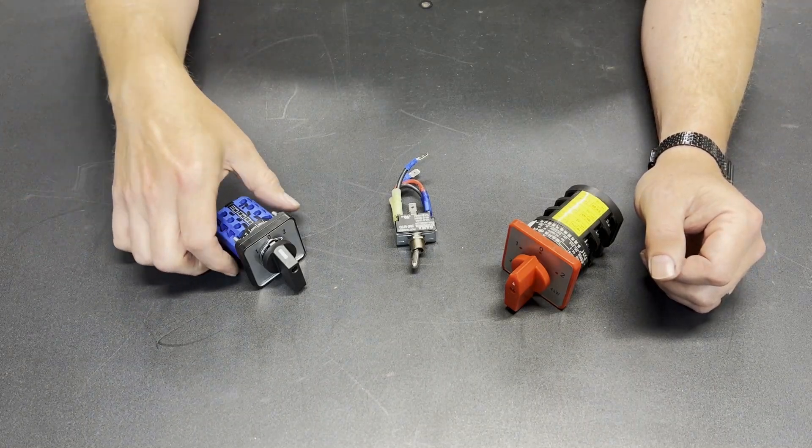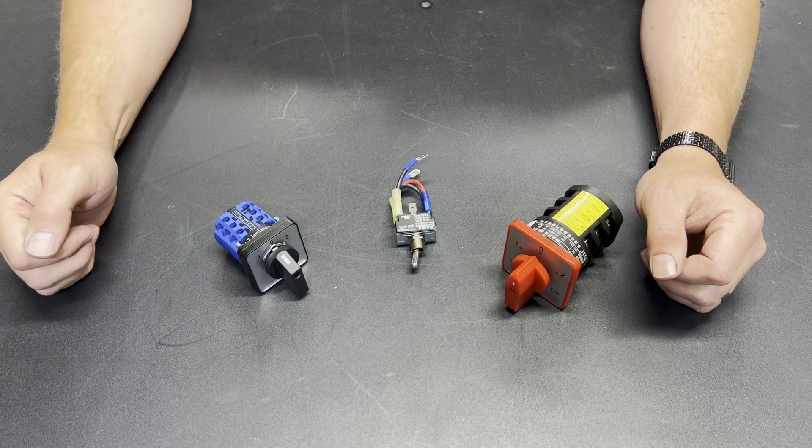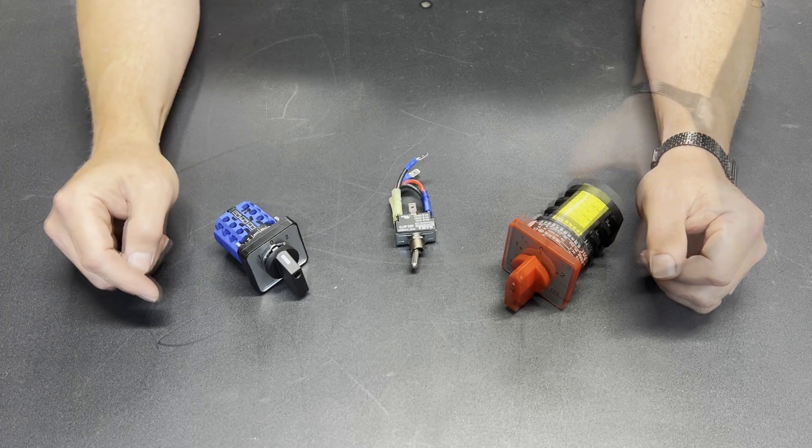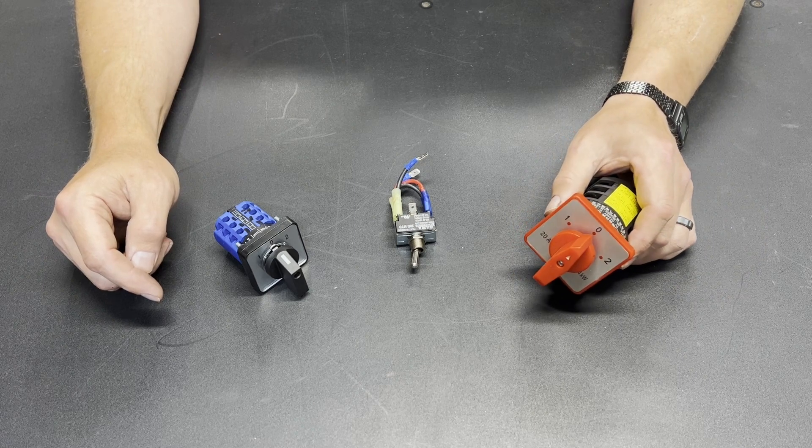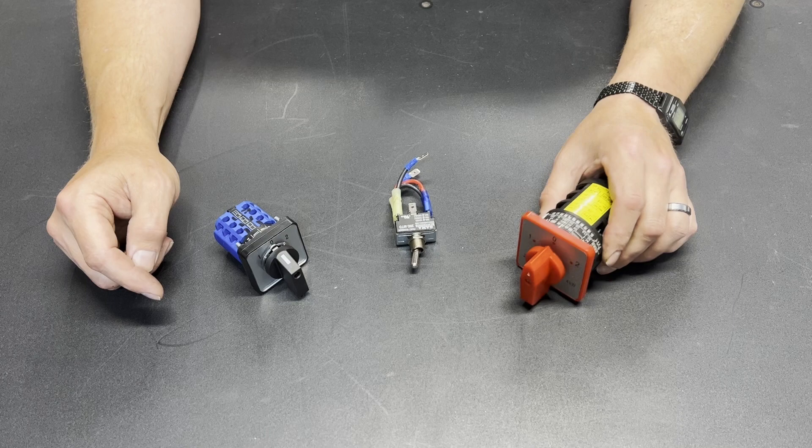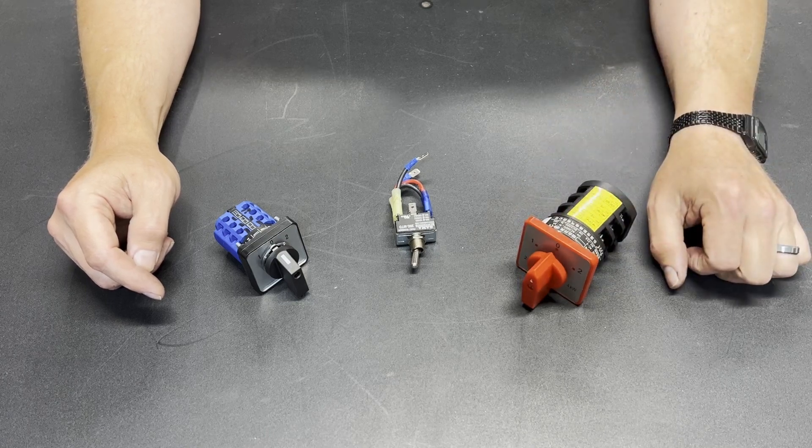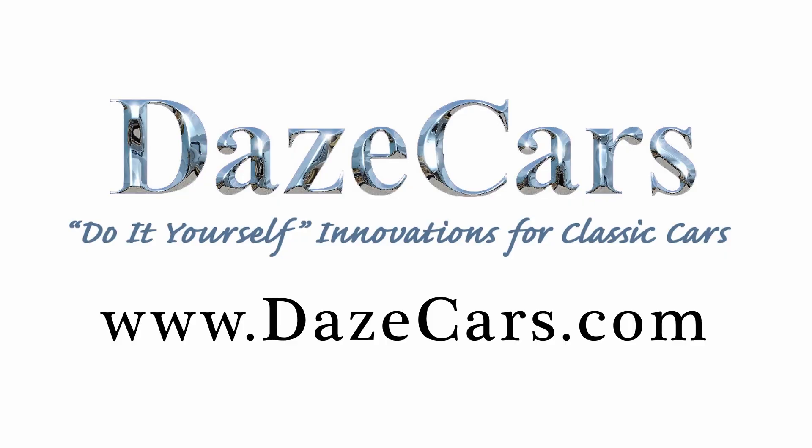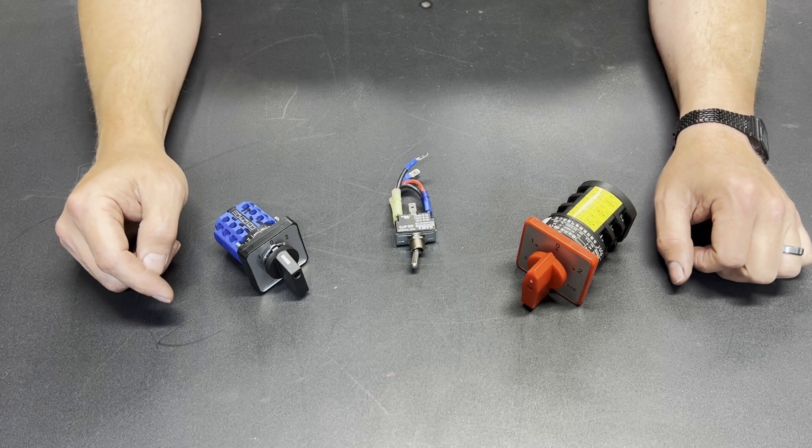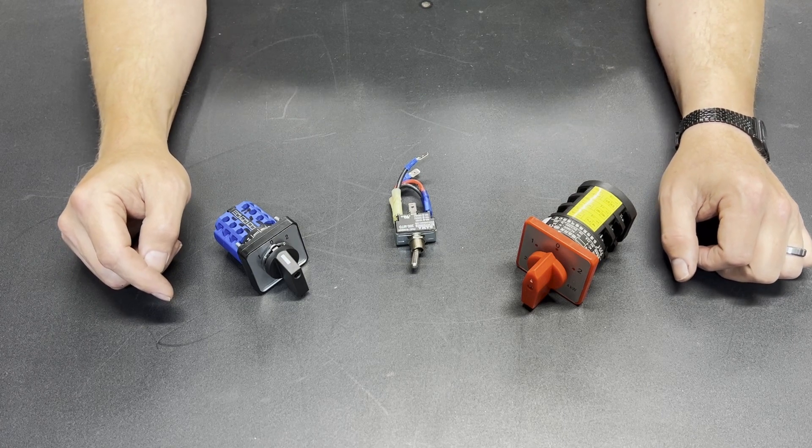Direction switches. We have the typical changeover switch, a double-pole double-throw toggle switch, and then we have this big triple-pole double-throw rotary switch. And let me tell you, size matters. Greetings, fellow DIYer, and welcome to my video.